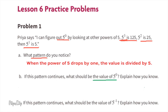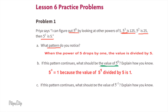Part b: If this pattern continues, what should be the value of five to the power of zero? Explain how you know. Let's review the pattern: 125 divided by five is 25, 25 divided by five is five, and five divided by five is one. So five to the power of zero would be one.